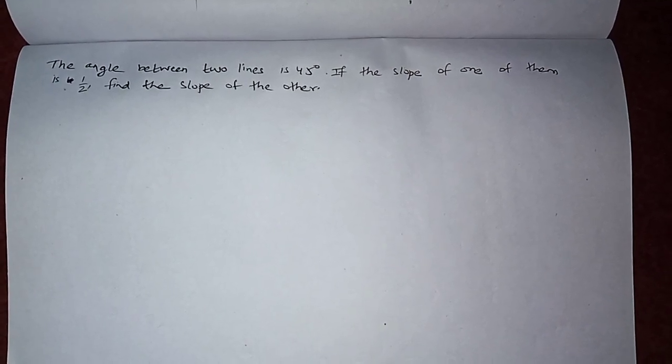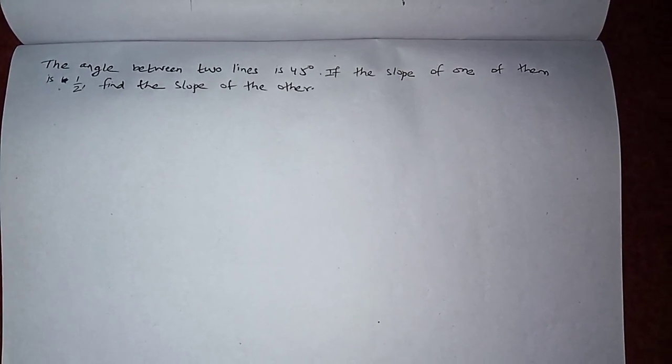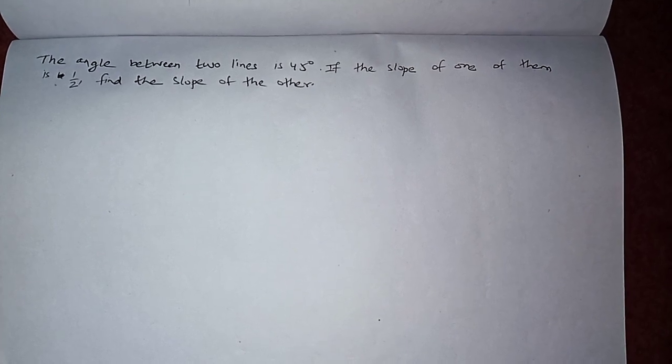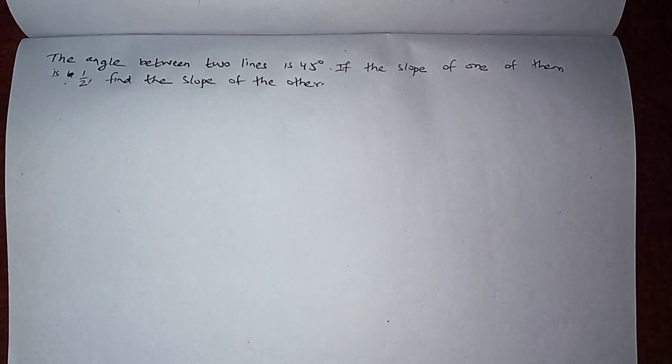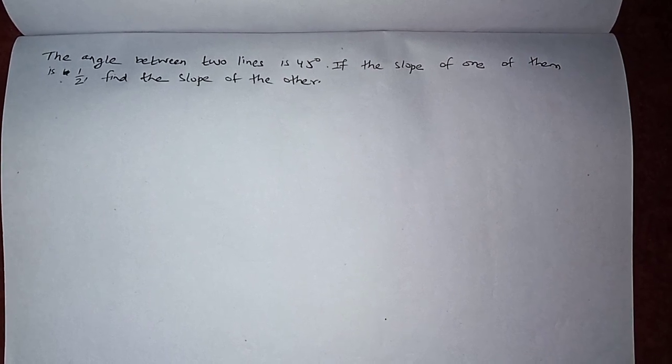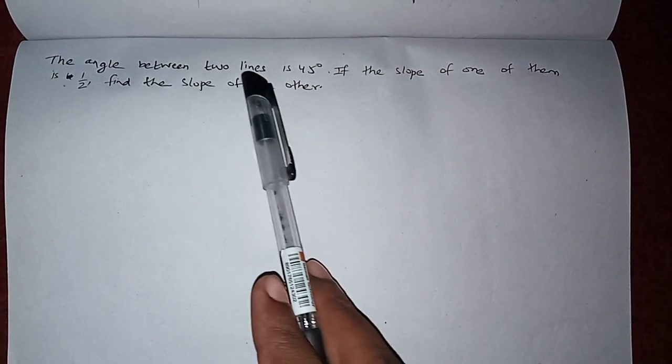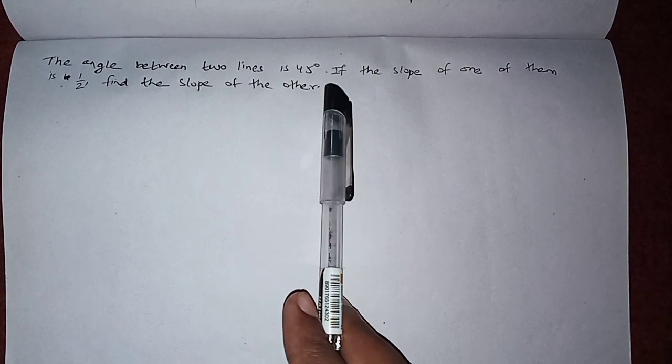Hello friends, welcome to my channel. This is Sagar Raya. Today I am back with another question from coordinate geometry class 10. So without any delay, let's go through the question. The angle between two lines is 45 degrees.